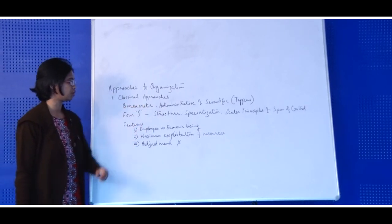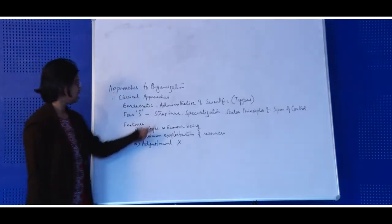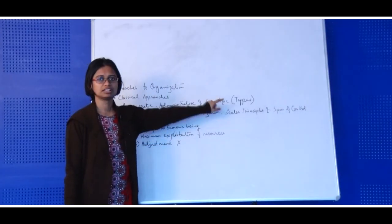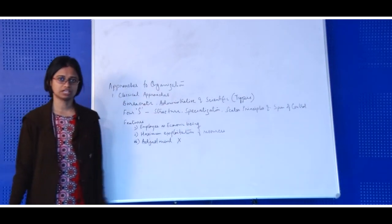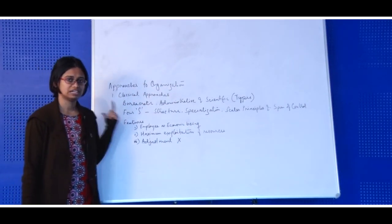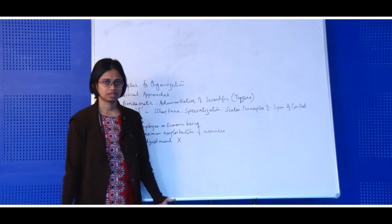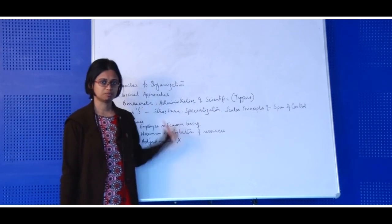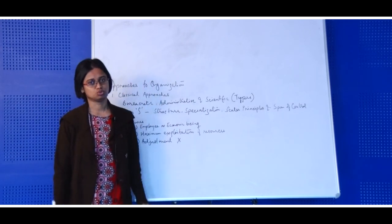Classical approaches have three types: first is the bureaucratic approach, second is the administrative approach, and third is the scientific approach. In the next step, we would be explaining those.